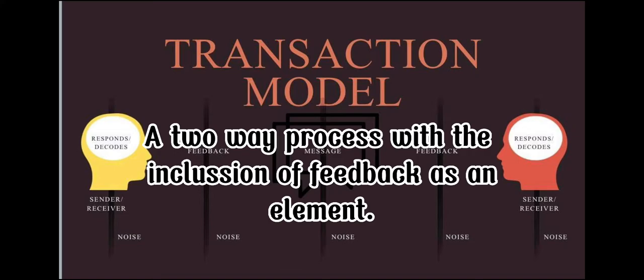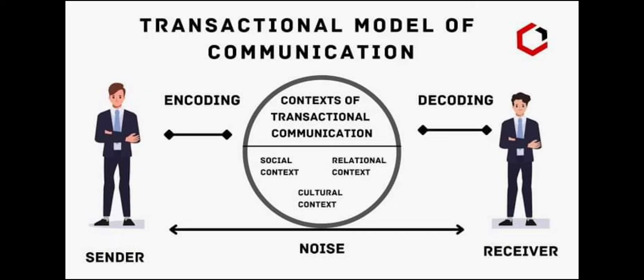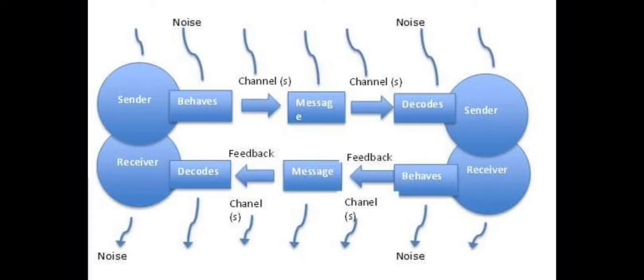Moving at number two: the Transaction model. It is a two-way process with the inclusion of feedback as an element. Unlike the Shannon Weaver model, this model involves a more interactive and collaborative exchange of messages between communicators with an aim of understanding each other. It also shows that there are multiple barriers — or so-called noise — that may interfere with the flow of communication.